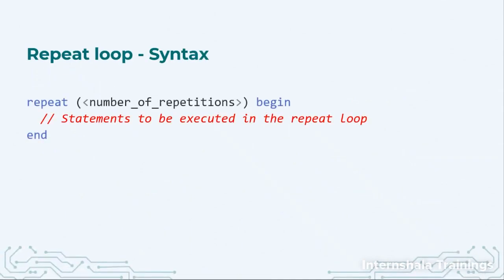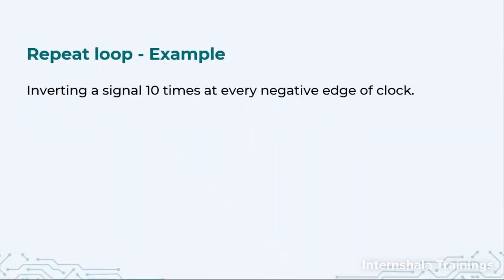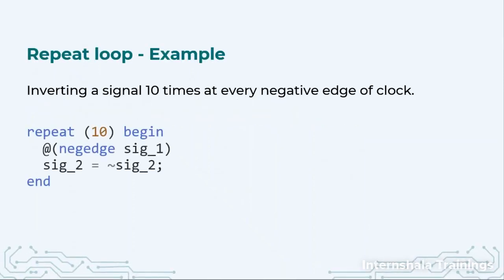The syntax for repeat loop is: repeat, and then in the bracket we mention the number of iterations. It can be 10, 20, 1 million also, but it will be one fixed number.